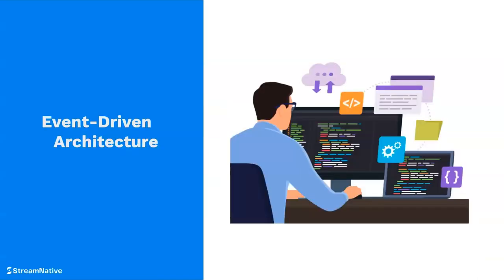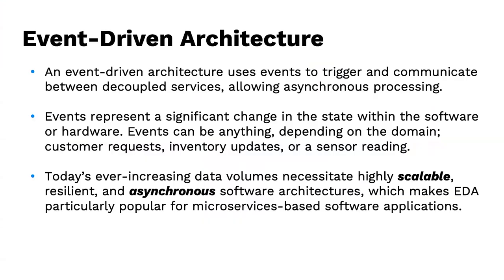Event-driven applications are designed to respond to events or changes in real time, driving actions and triggering different processes. Usually you have stateful processing where an event happens, you persist it to a database as a snapshot, and microservices communicate through APIs or remote protocols. Event-driven architecture is completely decoupled — I send a message out, systems can come in and process it at their own point in time. An event represents a change of state: an order was placed, a temperature sensor was read.